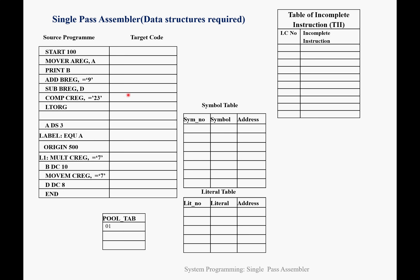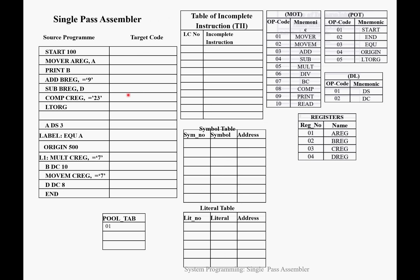We will see the output for this single-pass assembler: MOT, POT, declarative statements, and registers — this is the basic required information. MOT is the mnemonic opcode table where we have taken 10 different opcodes like MU-R, MU-M, ADD with their opcode numbers.